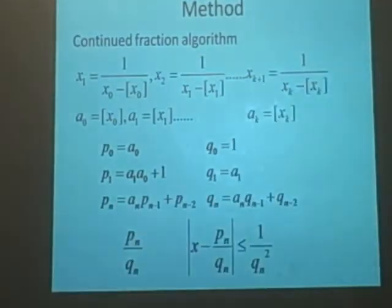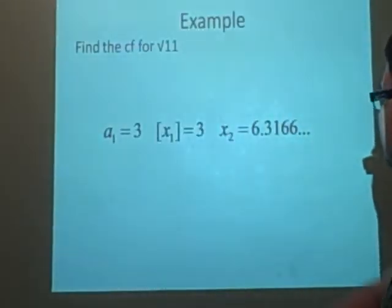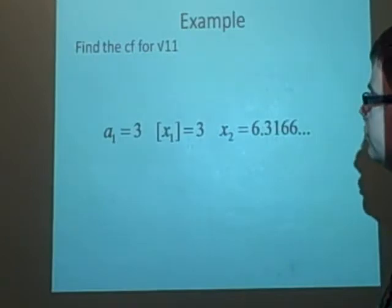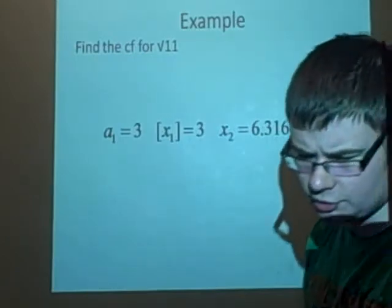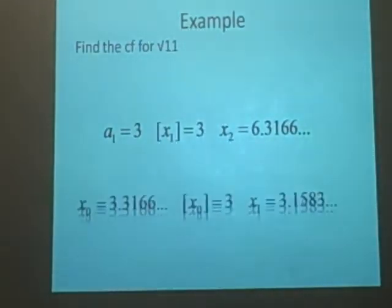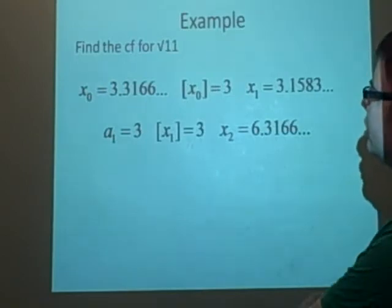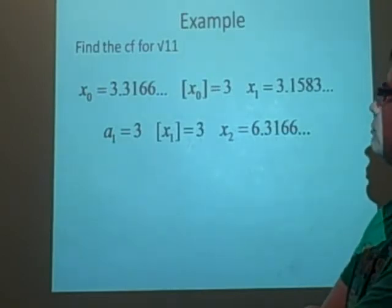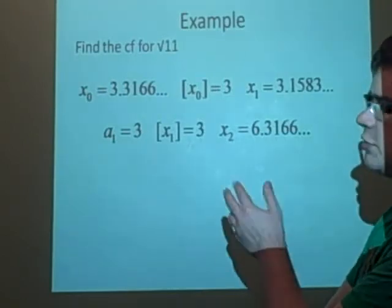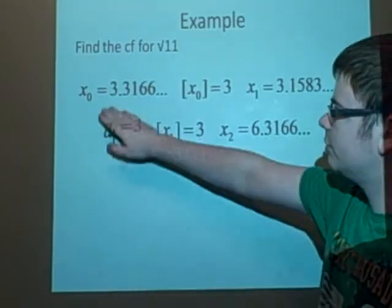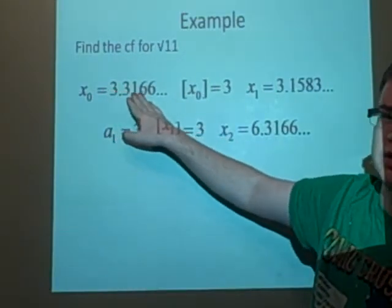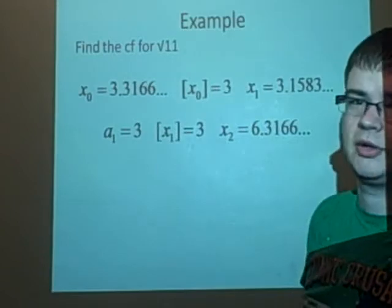Right now, we've got an example. We want to find the continued fraction for the square root of 11. Now, if you did square root of 11 on your calculator, you know 9 is 3 and 16 is 4, so it's going to be between 3 and 4, but we get 3.3166 as our value for square root of 11.